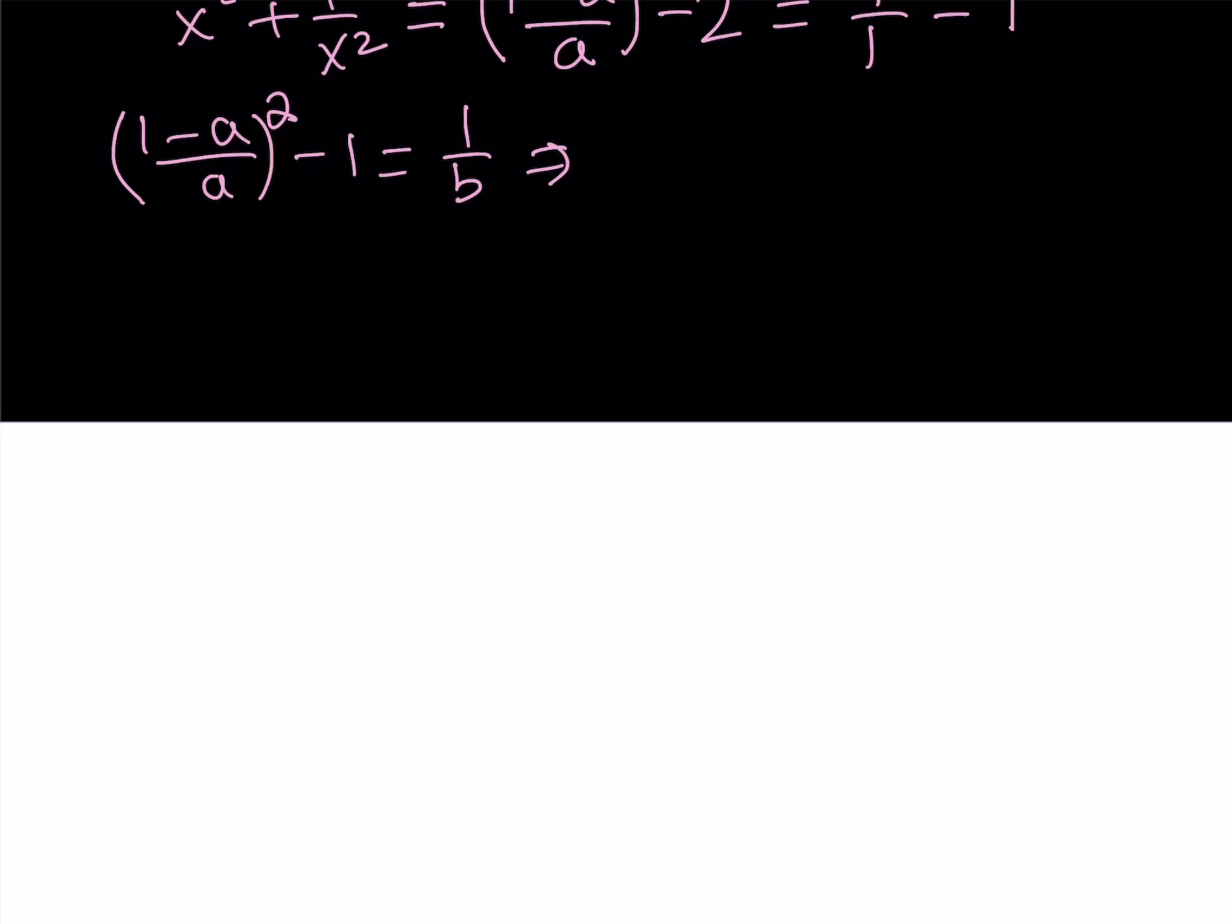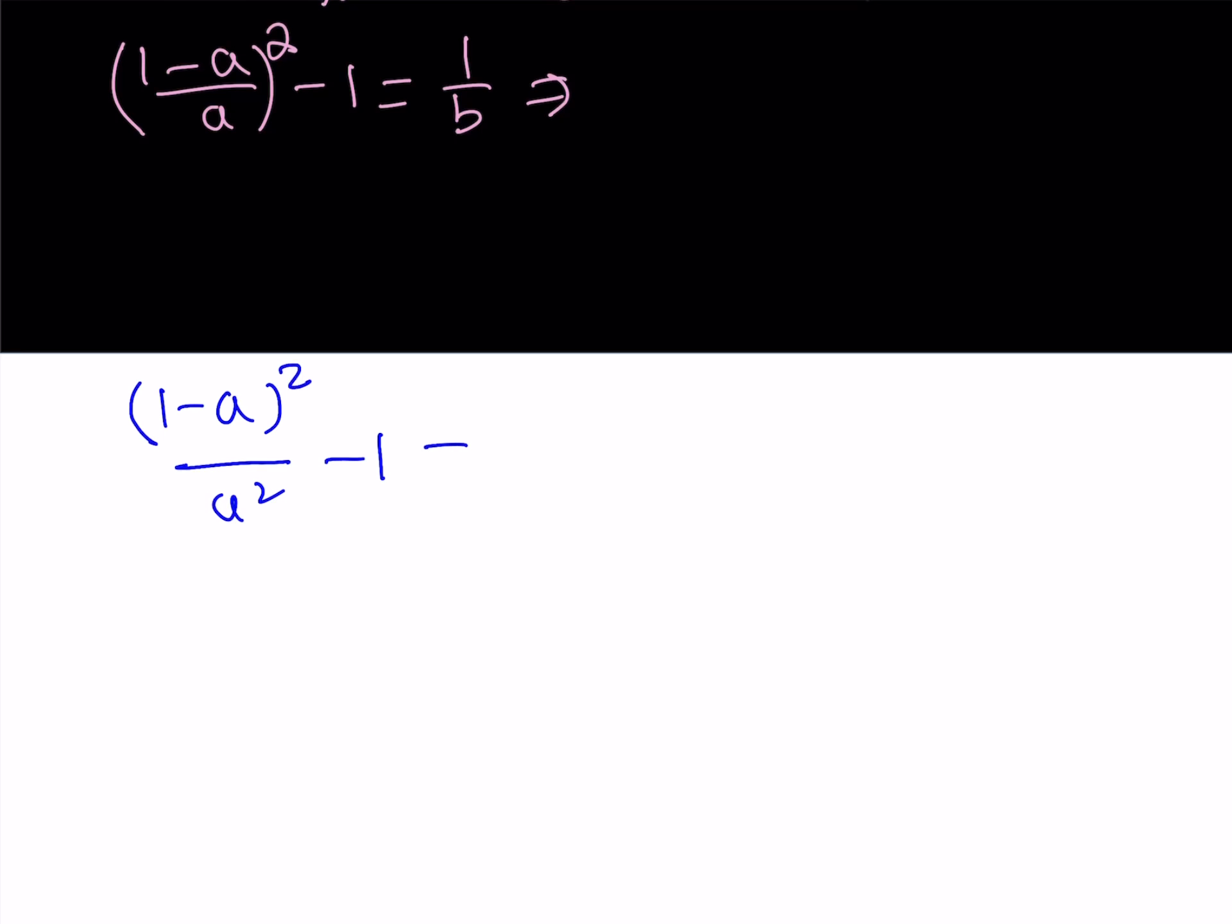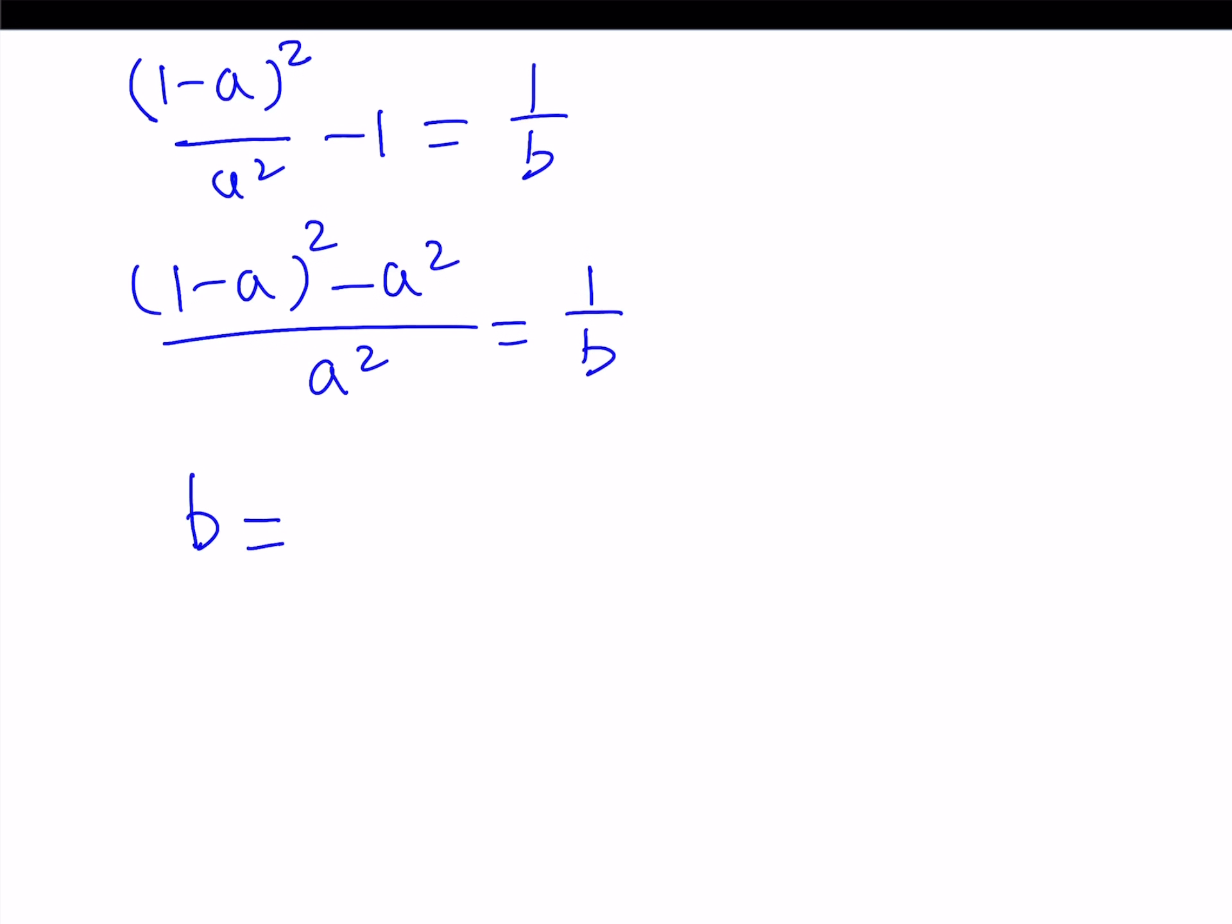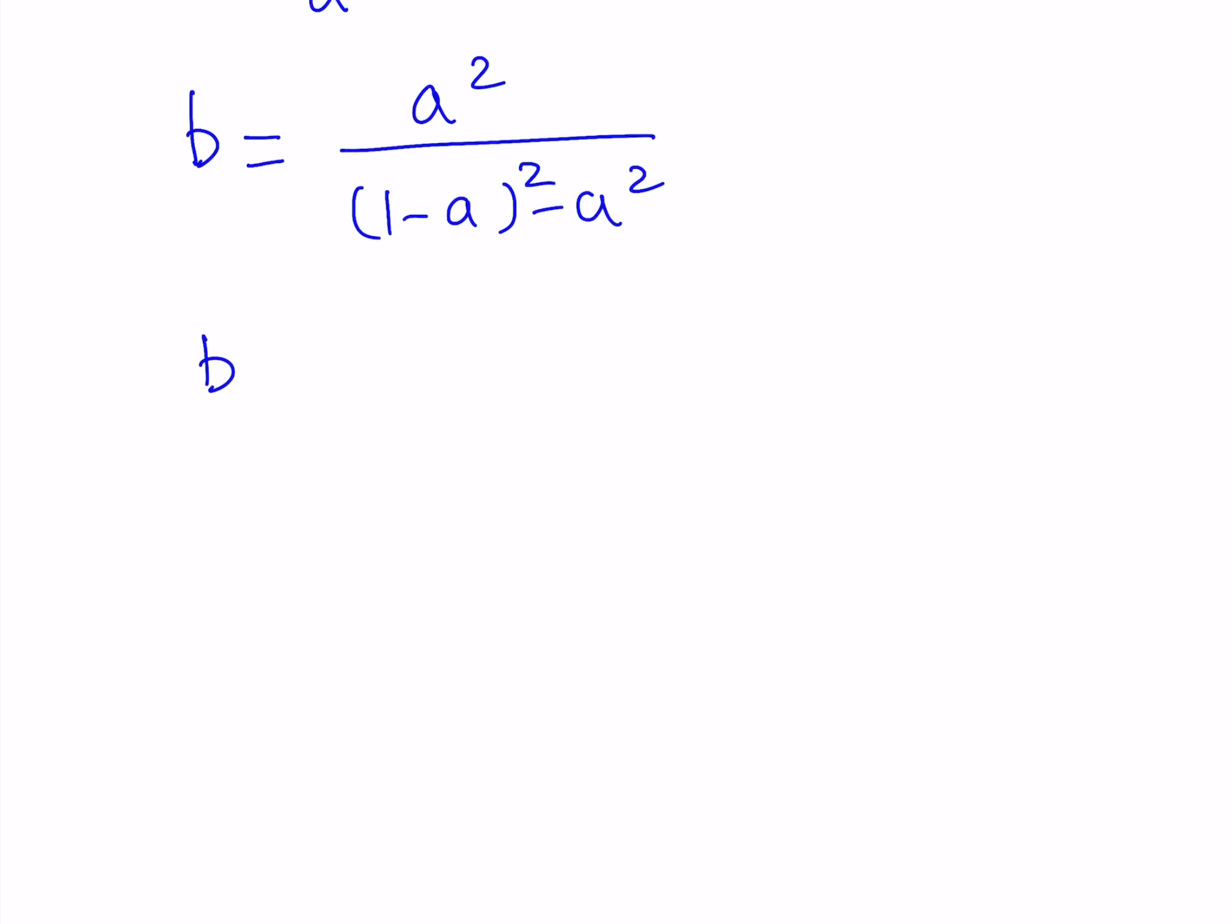So I'm going to make a common denominator. So let me write it like this first: 1 minus a quantity squared divided by a squared minus 1 is equal to 1 over b. And then from here, I get 1 minus a quantity squared minus a squared over a squared is equal to 1 over b. And since my goal is to find b in terms of a, I'm going to have to flip this. It's going to be a squared over 1 minus a quantity squared minus a squared. Let's go ahead and simplify this expression, and then that is going to be our answer in terms of a. Now let's see what happens. So b can be written as a squared divided by... If you expand this, you're going to get 1 minus 2a plus a squared minus a squared. They're going to cancel out, and you're going to end up with this expression.